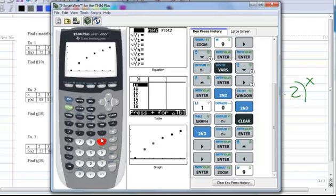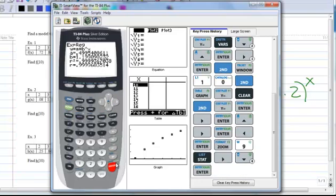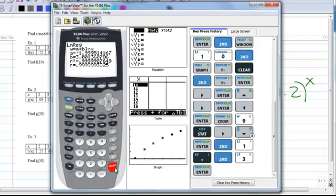So we're going to run a logarithmic regression. Stat, calc, and go down to logarithmic. Natural log regression, there it is. Now I have to tell it I have stuff in list 1, comma, list 3, so it looks at list 1 and list 3. Enter, enter. Alright. So there's my A and there's my B.